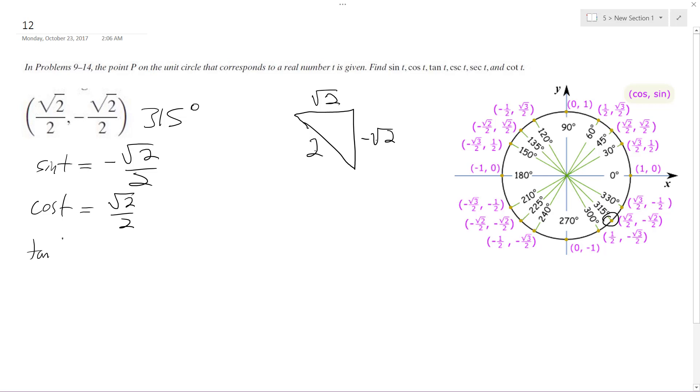And then tangent of t is going to be equal to y over x, which is negative root 2 over root 2, which is equal to negative 1.